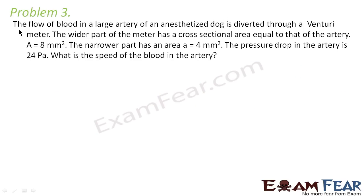Volume 3 asks: the flow of blood in a large artery of an anesthetized dog is diverted through a Venturi meter. The wider part of the meter has a cross-sectional area equal to that of the artery, A equals 8 mm square. The narrower part has an area a equal to 4 mm square. The pressure drop in the artery is 24 Pascals. What is the speed of the blood in the artery?